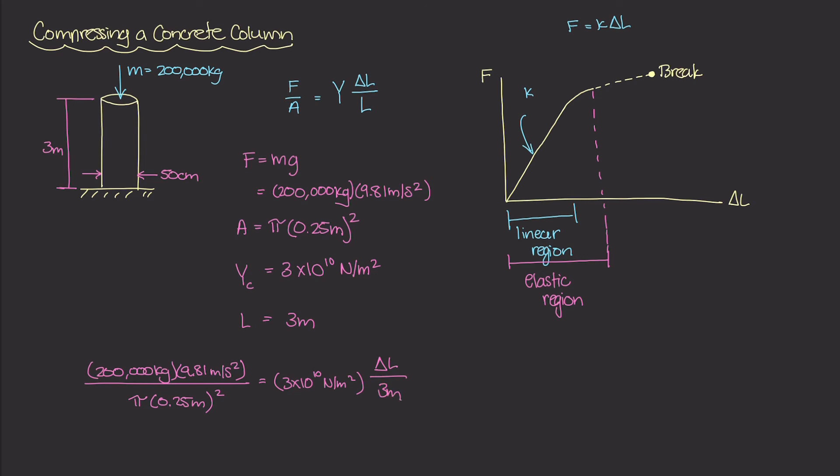And if we just solve this out, we get ΔL is equal to 0.9992 millimeters. So when a 200,000 kilogram mass is sitting on top of this concrete column, the force exerted by that mass on this concrete column is going to deform or compress this concrete column by some amount ΔL, and it is roughly one millimeter.